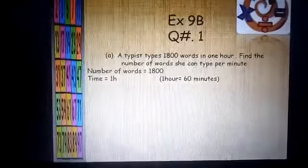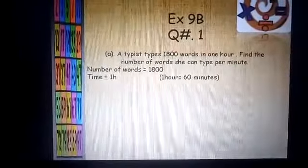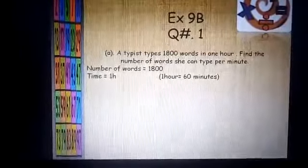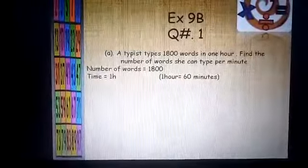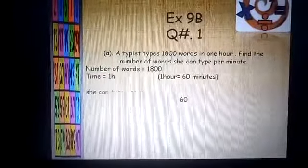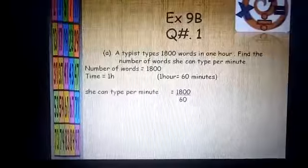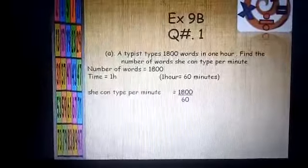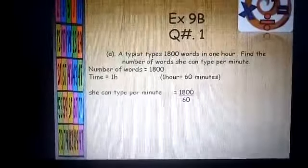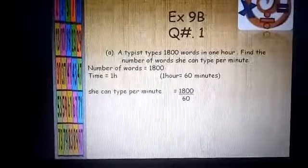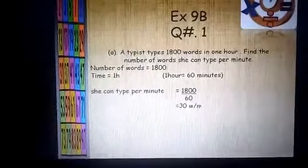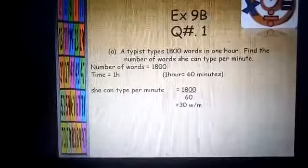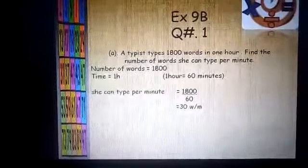So 1 hour has how many minutes? 60 minutes. She can type per minute: 1800 words will be divided by 60 minutes. And after dividing we will get the number of words, 30 per minute. Is that clear?